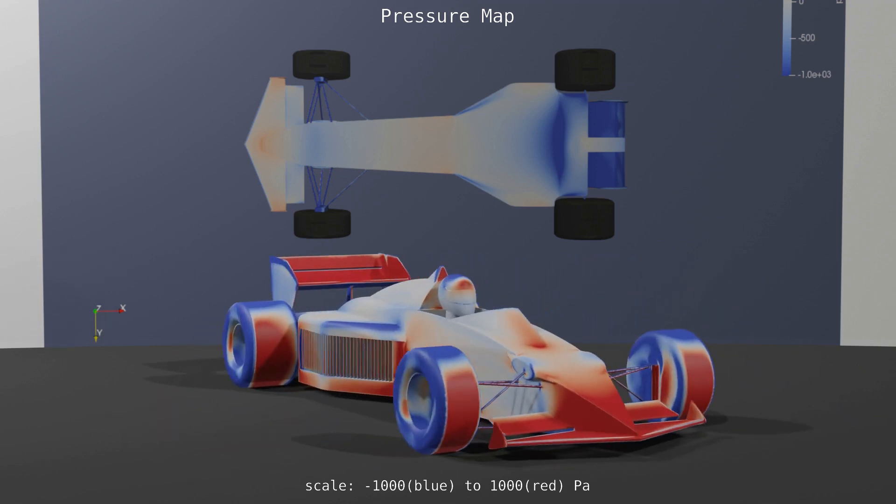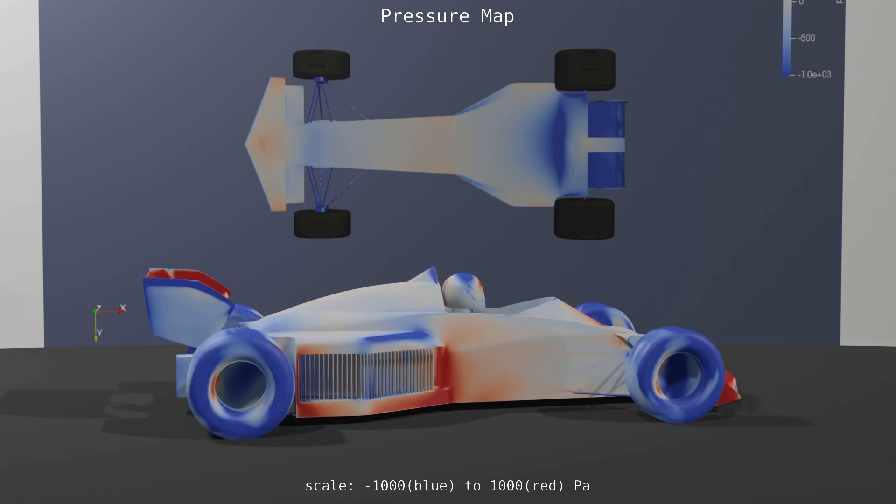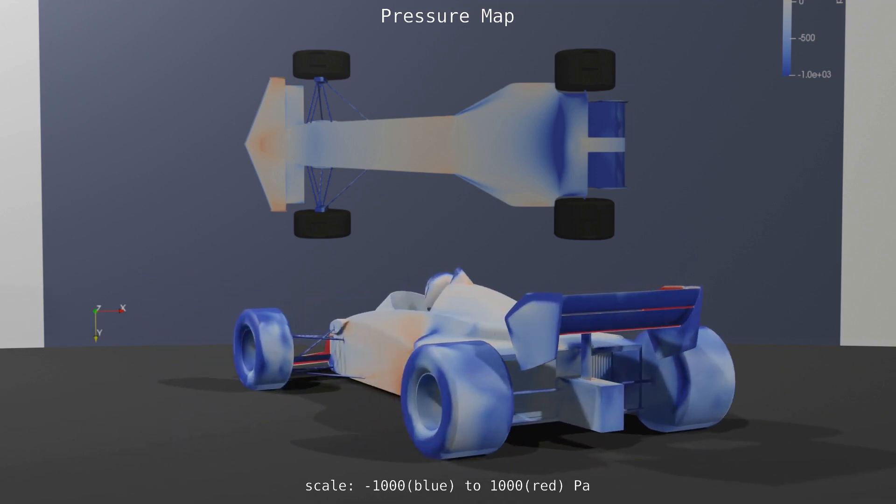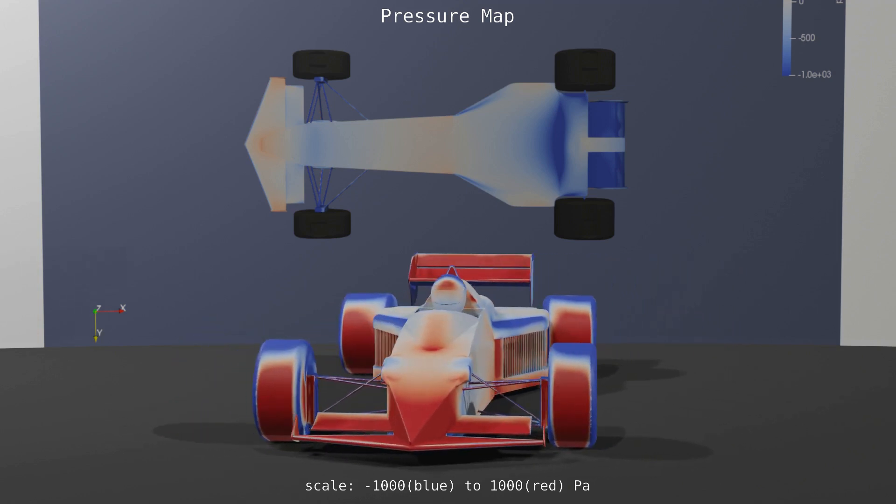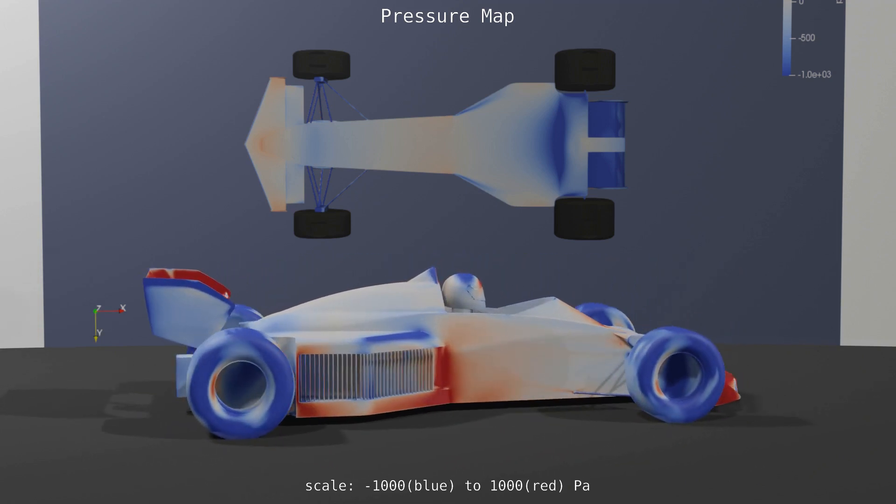With the rear wing dominating the downforce numbers, the other parts of the car are responsible for the balance. The rear of the body is the most influential part of the body for the low flap angle whereas the front is for the high flap angle.